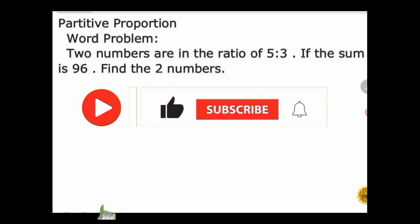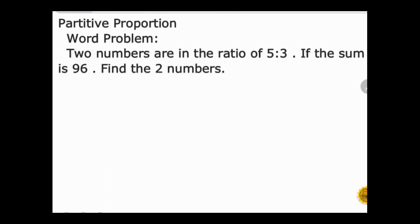Partitive proportion word problem: Two numbers are in the ratio of 5 to 3. If the sum is 96, find the two numbers.